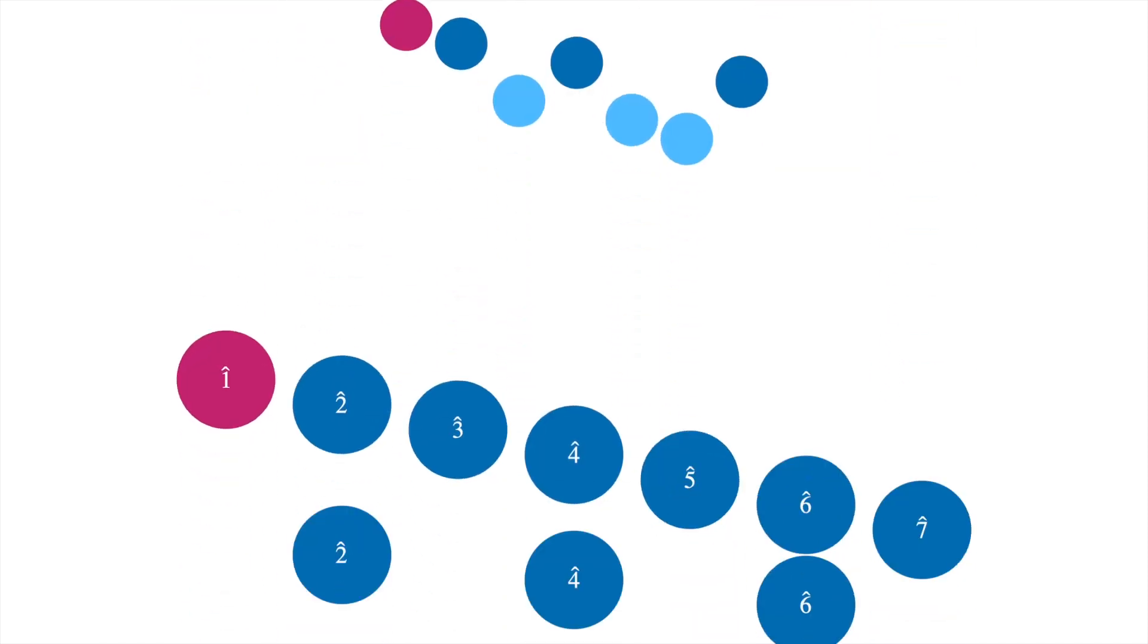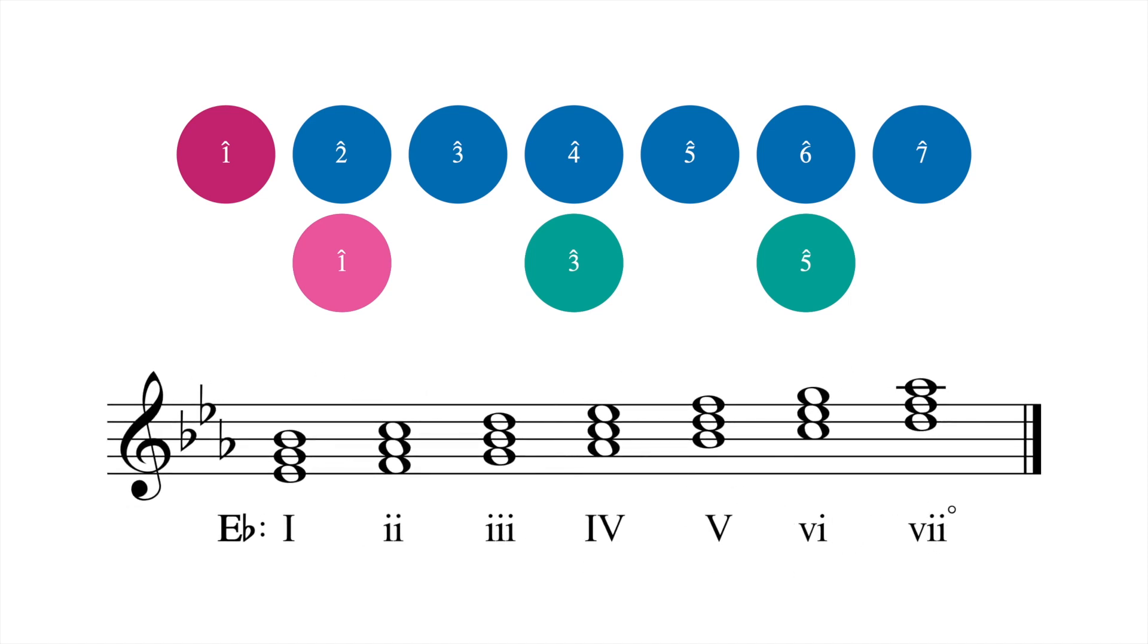A diatonic modulation is defined as one where the new tonic chord is also available in the scale of the old key without alterations. For example, an F minor chord is available in Eb major, so modulating from Eb major to F minor is a diatonic modulation.